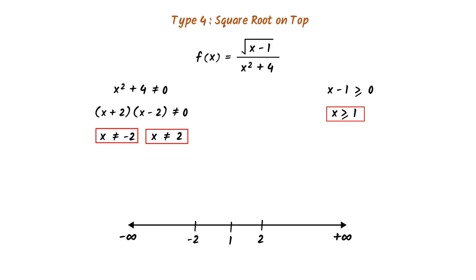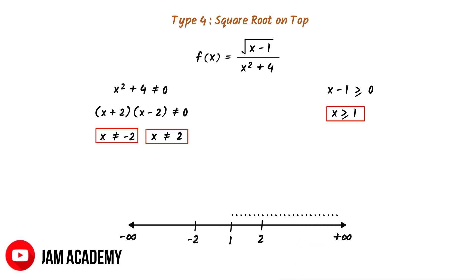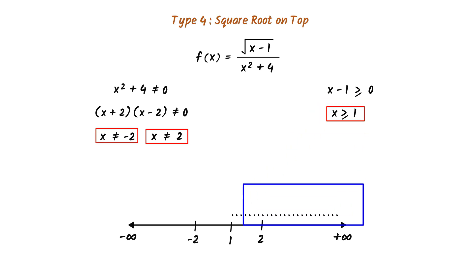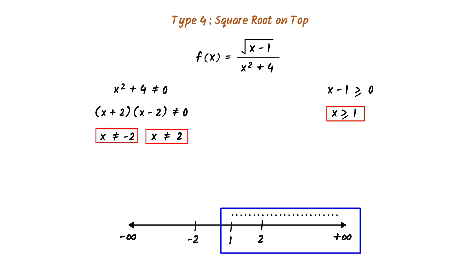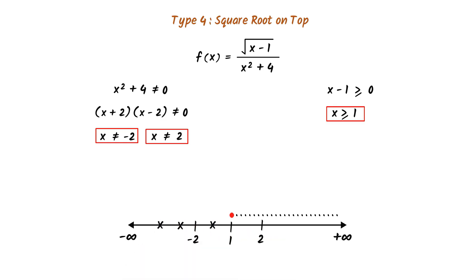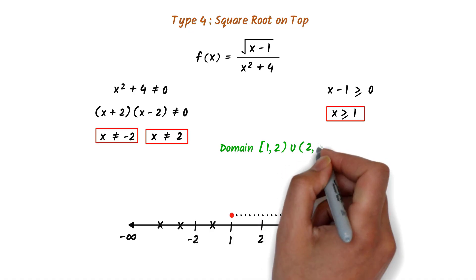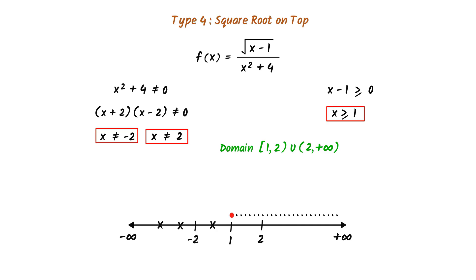The condition x ≥ 1 means we select only the region from 1 onwards. Since 1 is included in this region, I put a dot on 1. However, x = 2 must be excluded from the domain. The domain is [1, 2) ∪ (2, +∞), because x = 2 would make the denominator 0.